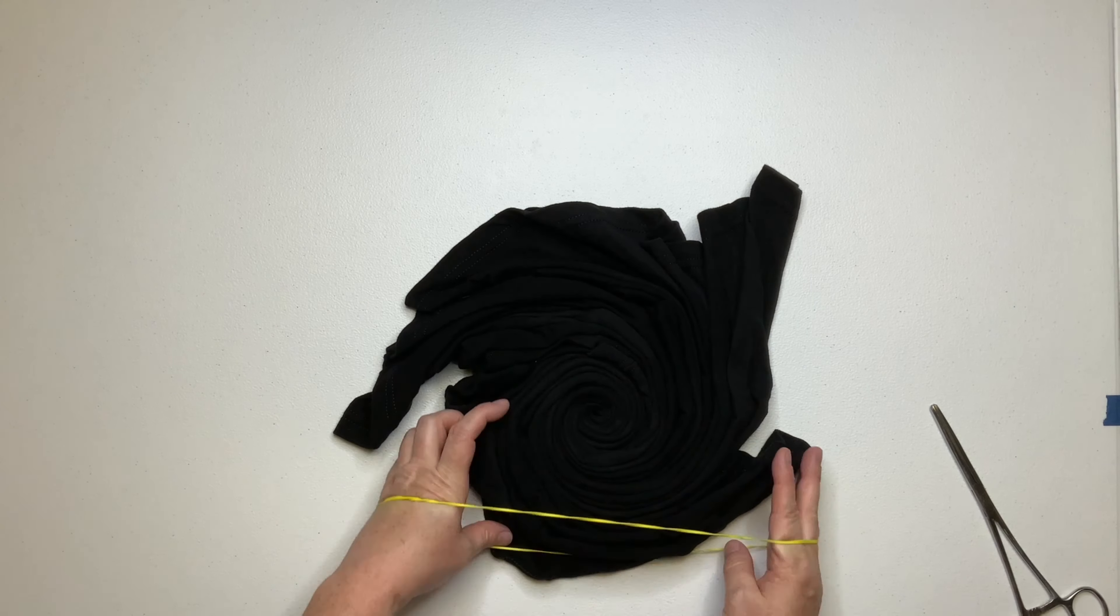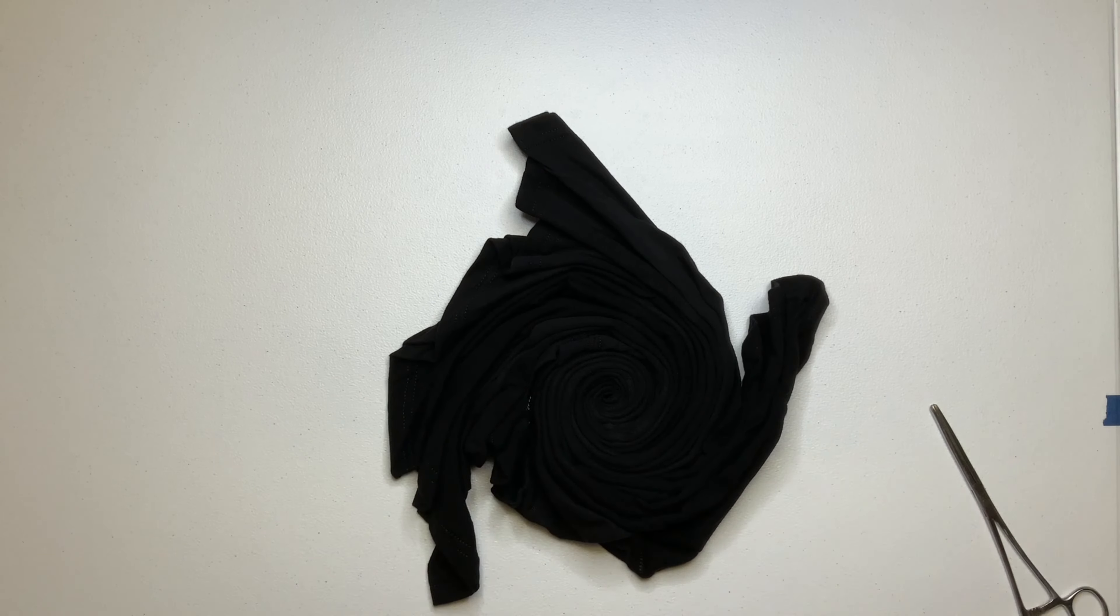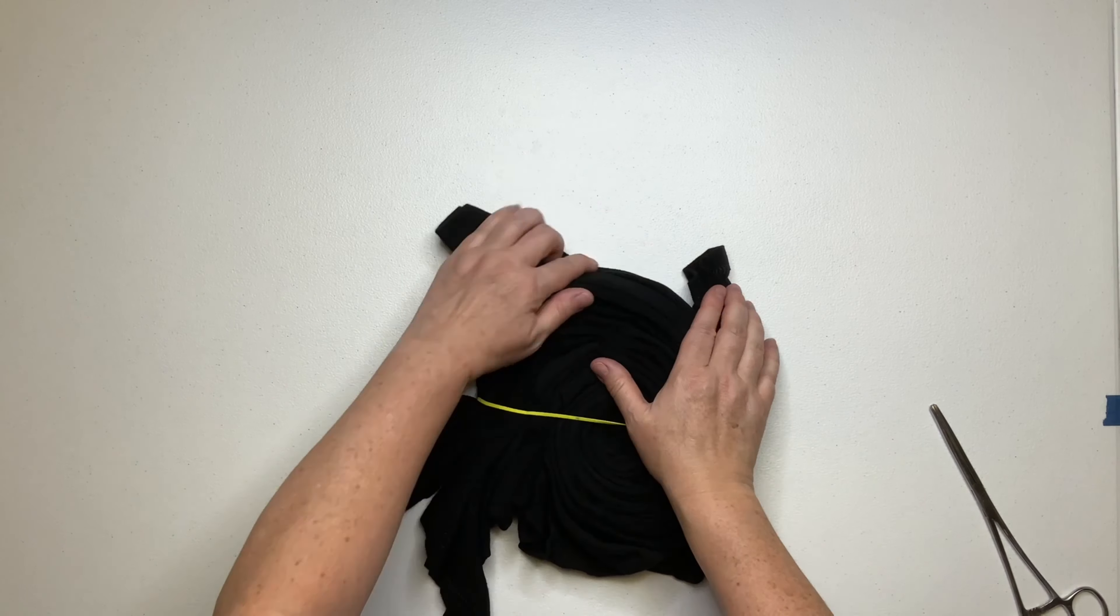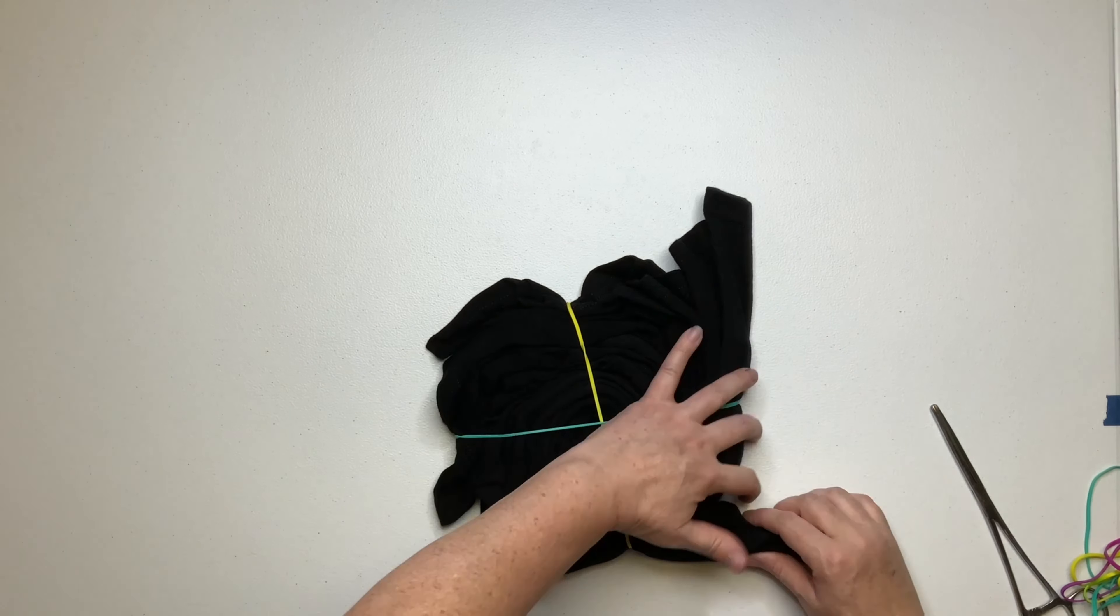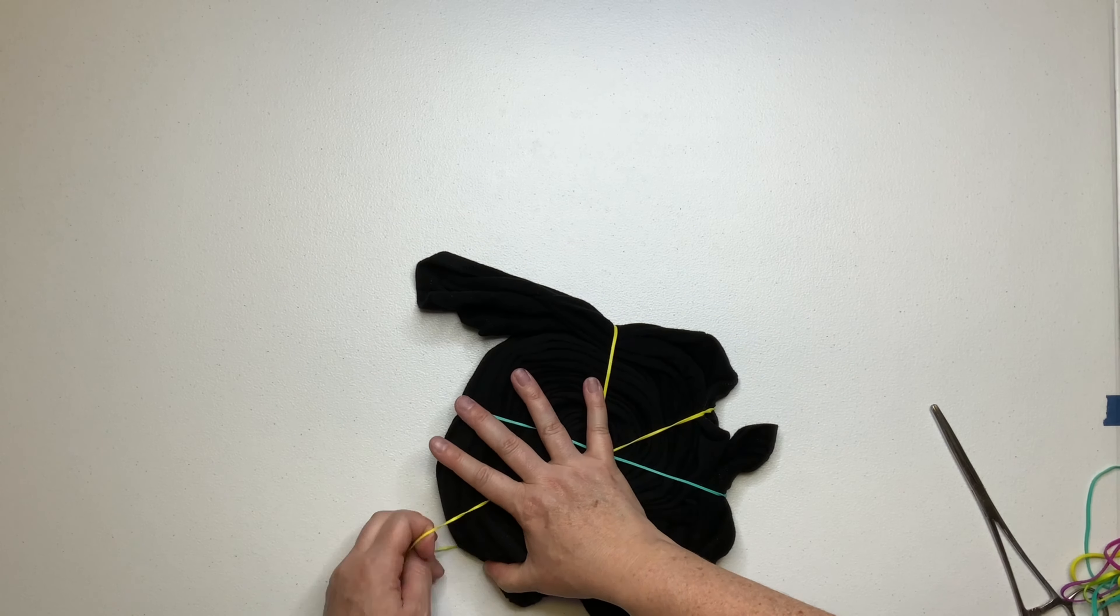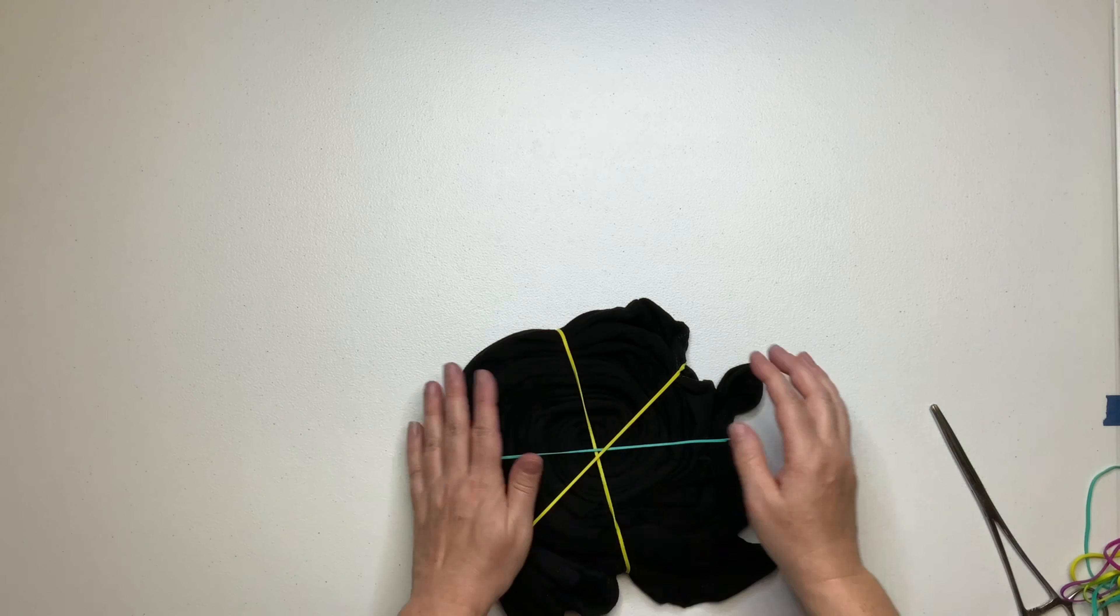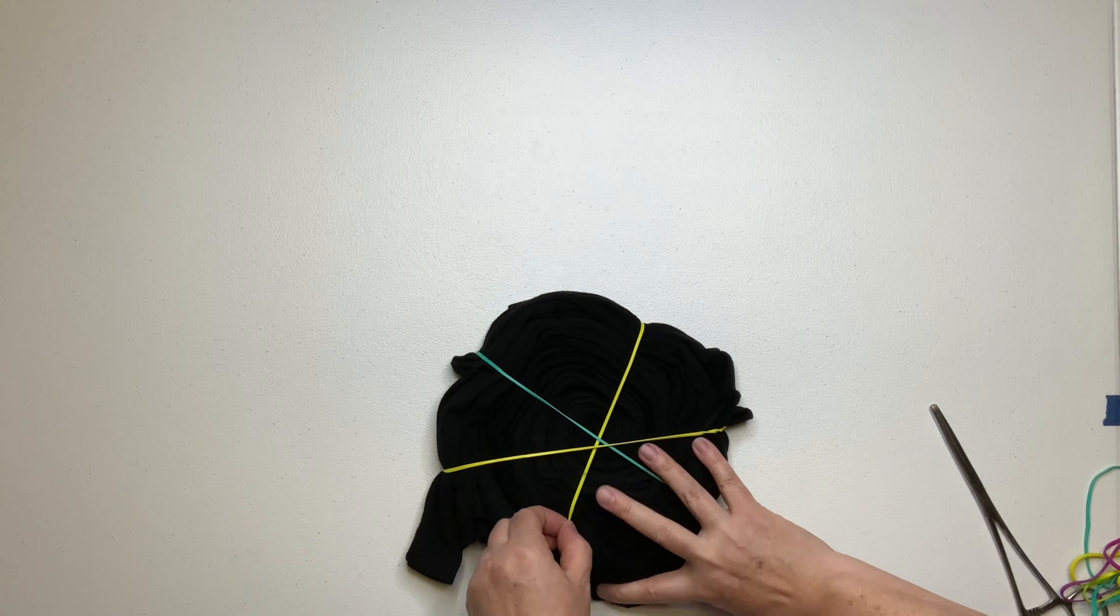Once you have it all spiraled up, it's time to secure it. For this project, I'm going to use rubber bands. I like to use rubber bands for spirals, I just feel like they're easiest. And I have a link down below in the description box for these rubber bands and everything else that I use to create tie dye.